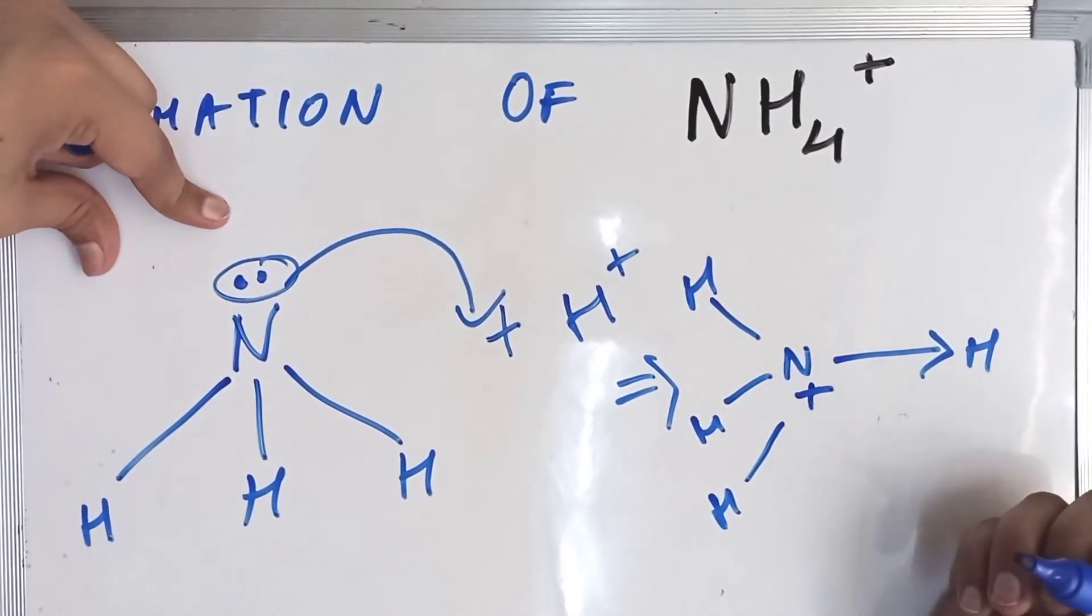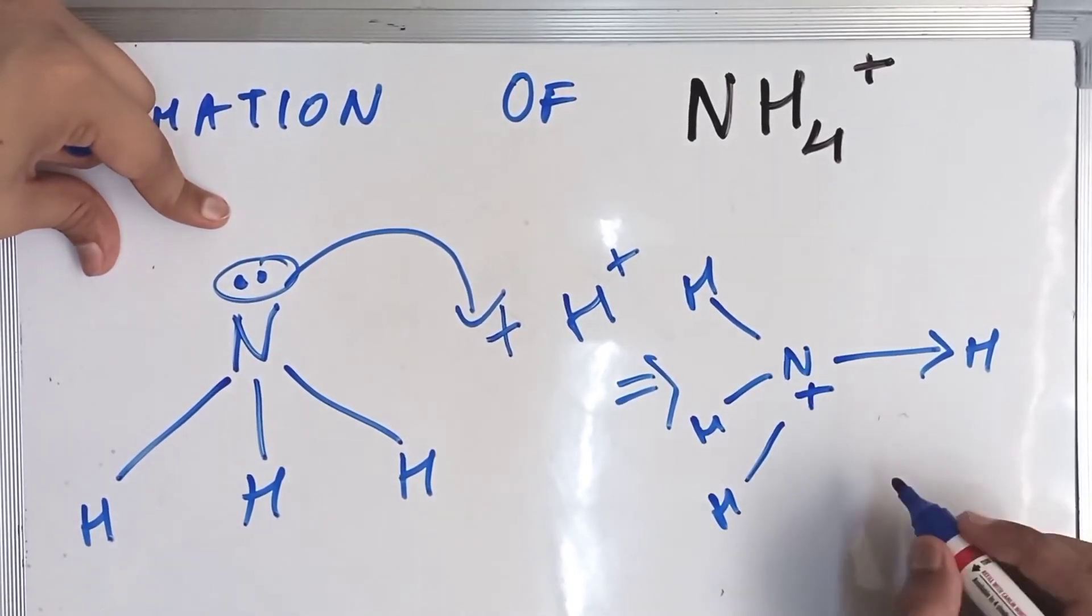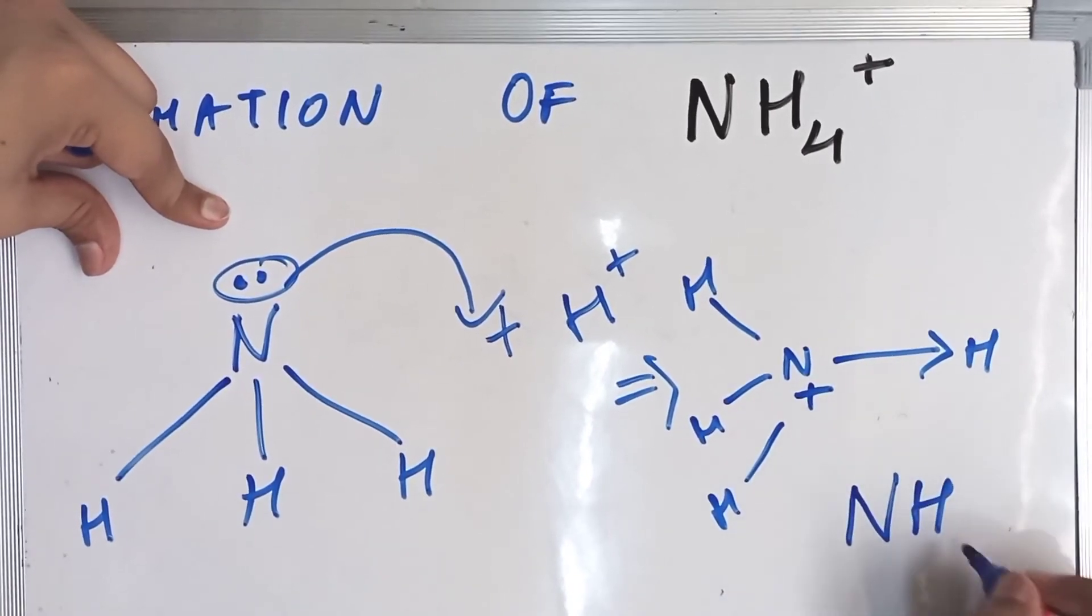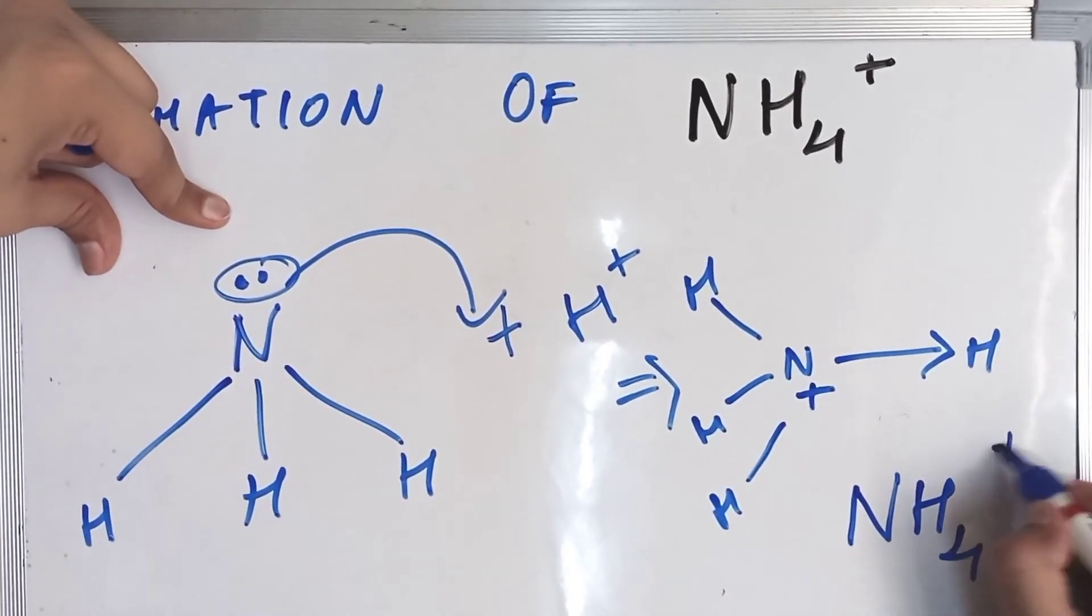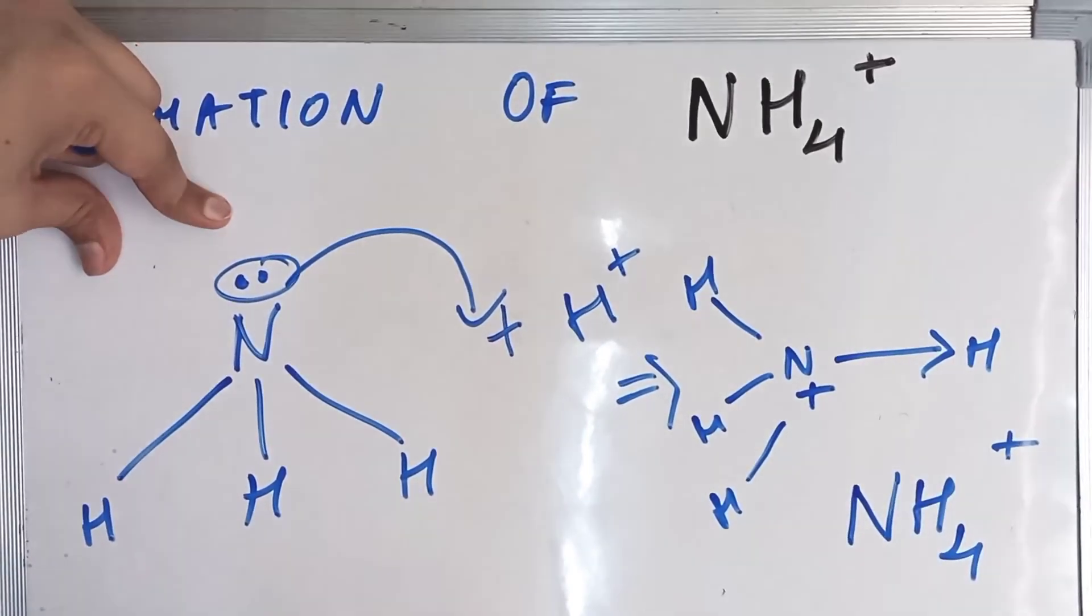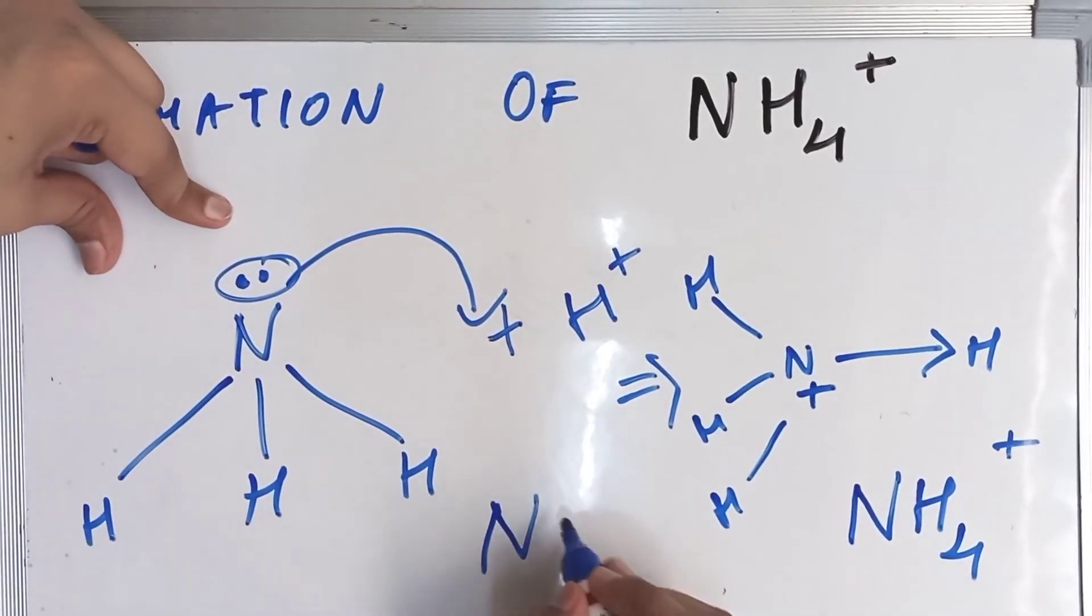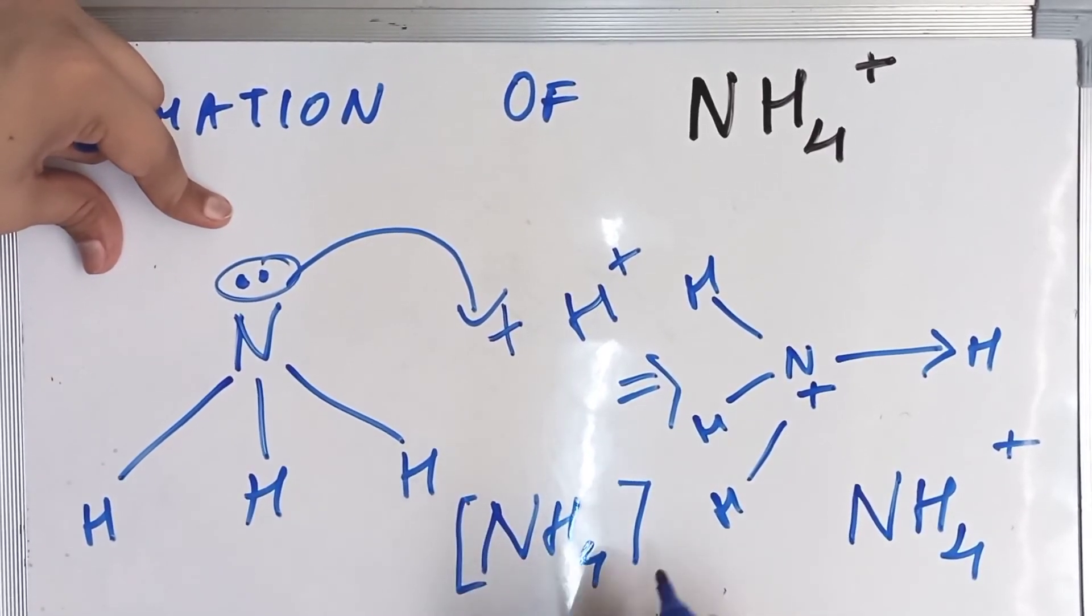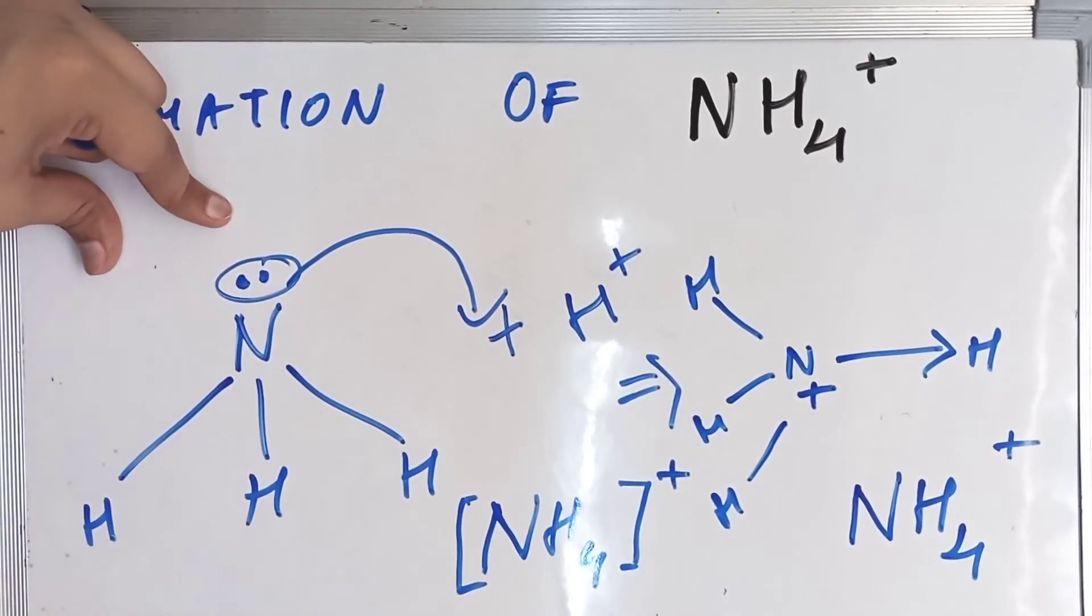The whole molecule comes out to be like this: NH4+. Or you can write it as NH4 with a positive charge on the whole ion.